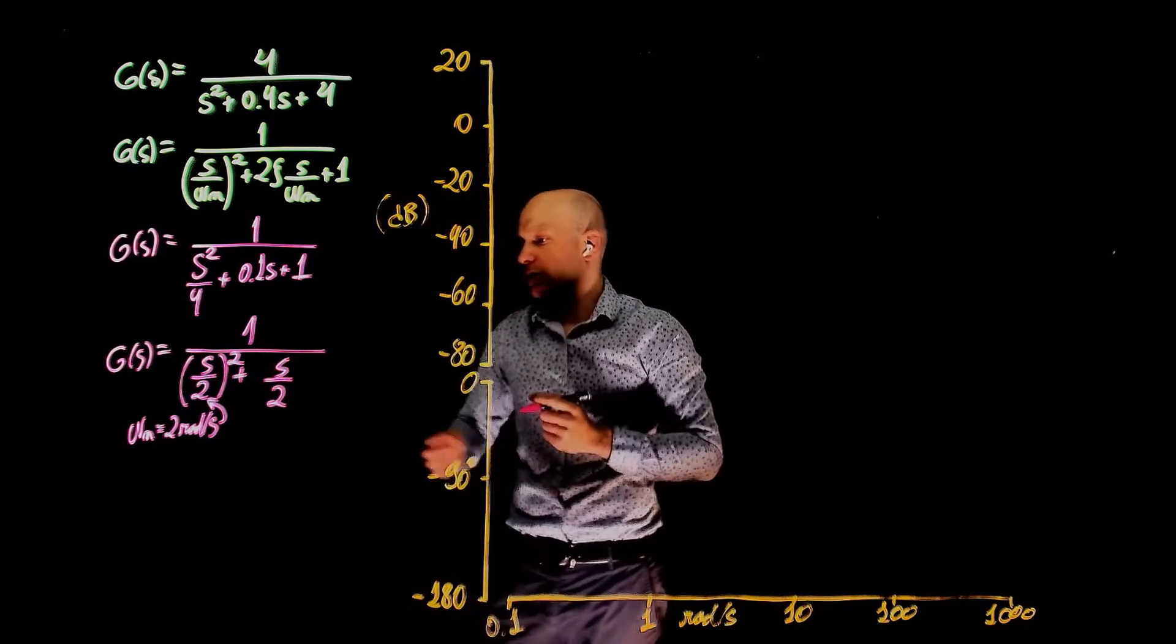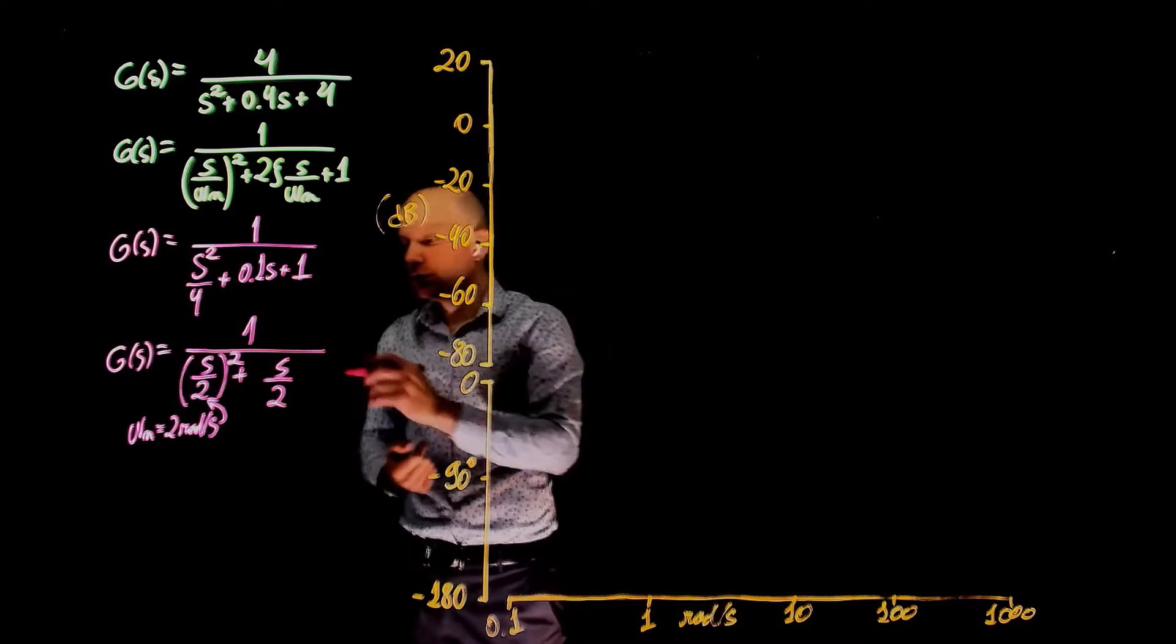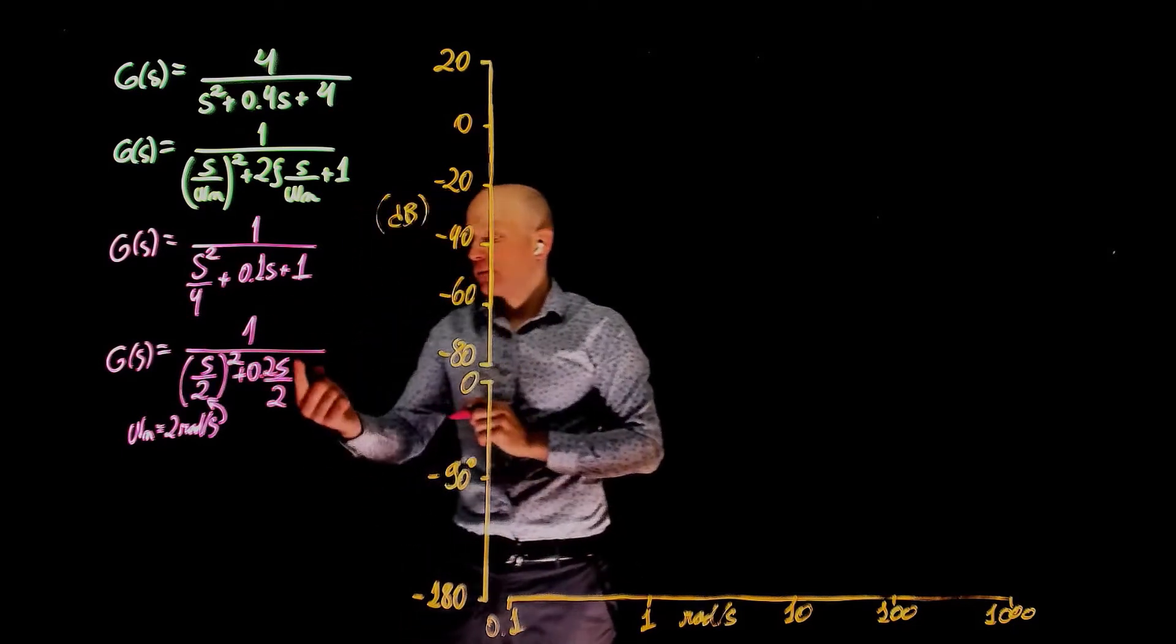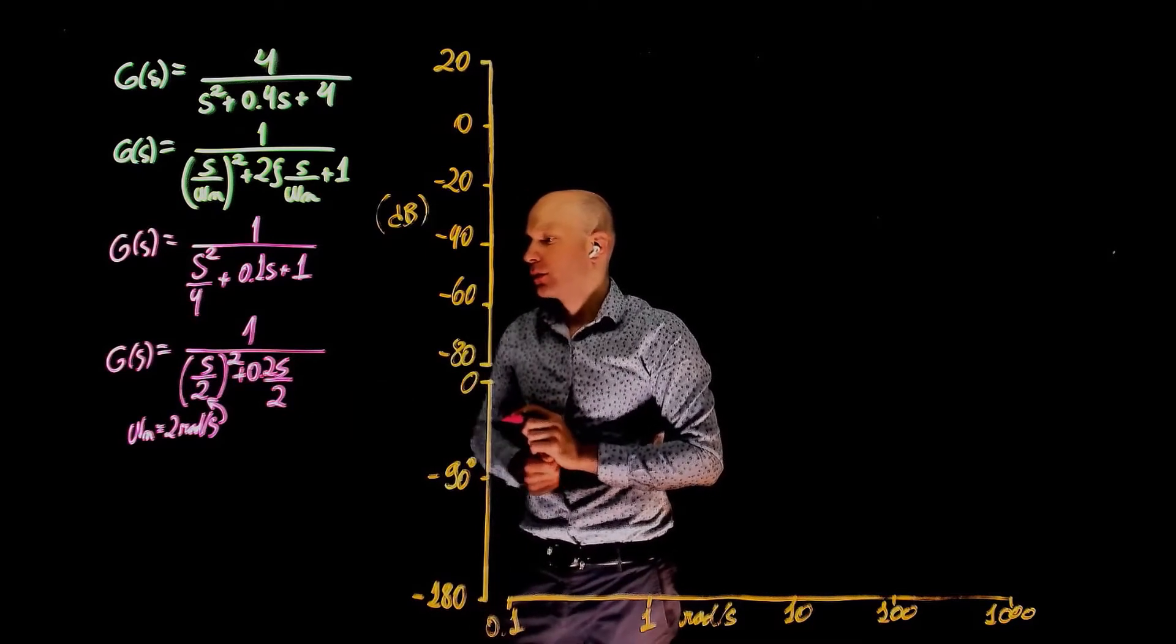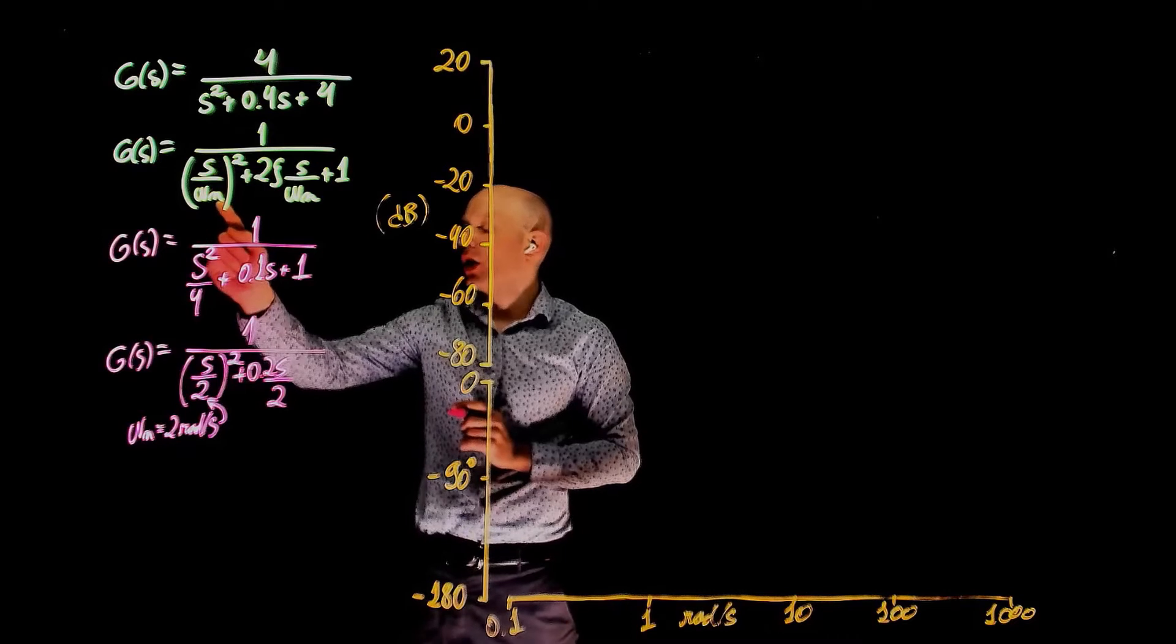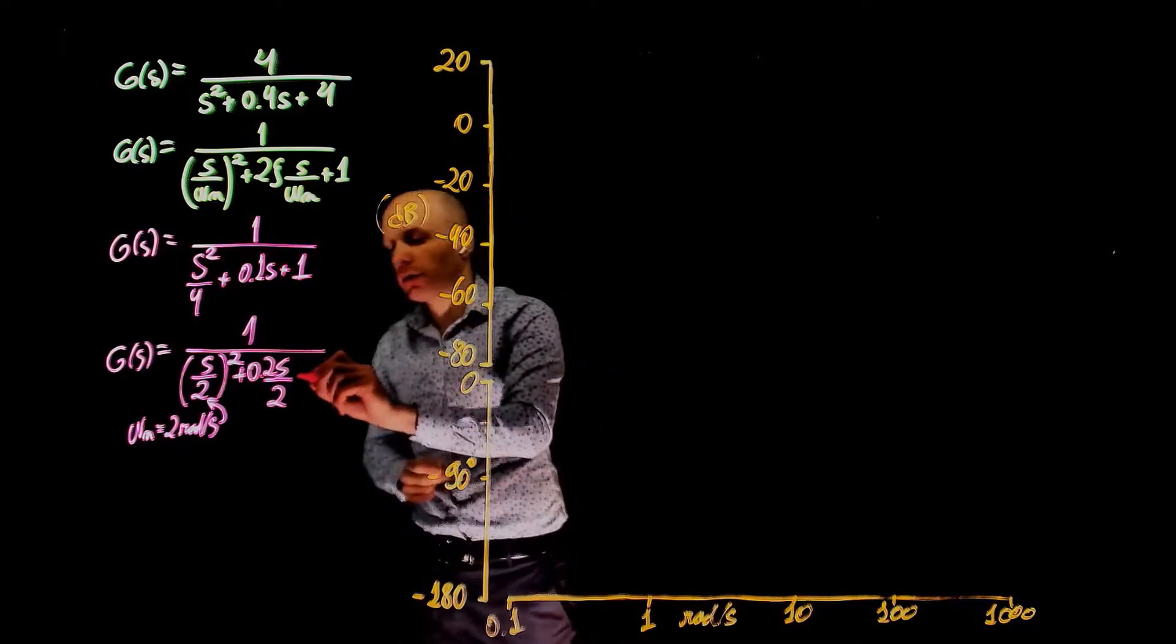What we did here was simply multiplying the bottom and the top of the equation by 2. So this becomes 0.2 s over 2. Now we have omega n under this s squared and also have omega n under this other s. So now this is the standard form.